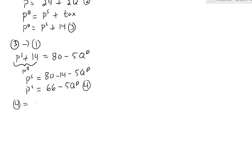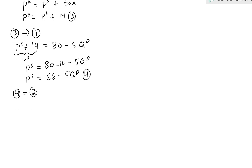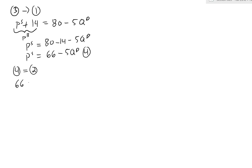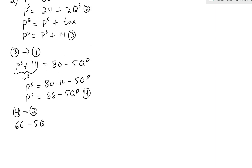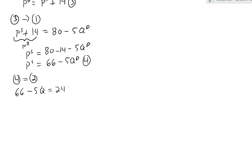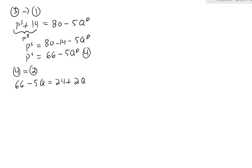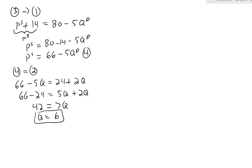Now we invoke equilibrium by setting equation 4 equal to the supply curve (equation 2): 66 minus 5Q equals 24 plus 2Q. Rearranging: 66 minus 24 equals 5Q plus 2Q, so 42 equals 7Q, giving Q star equals 6. The quantity has fallen from 8 to 6 due to the tax.